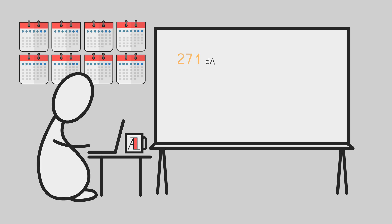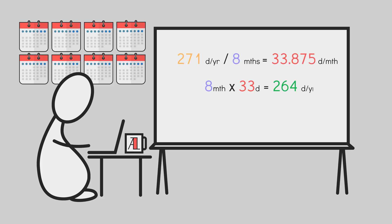271 divided by 8 is 33 plus change. 8 33-day months amounts to 264 days, leaving us 7 days short of a full year.